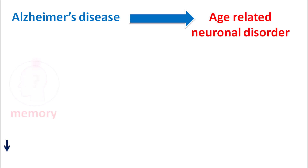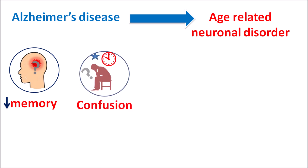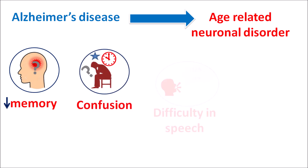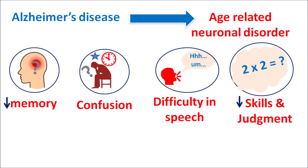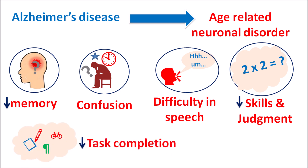In these patients we can observe loss of memory and confusion with respect to time or location, difficulty in speech resulting in slurred speech, and reduced skills as well as judgment. Patients cannot complete daily tasks due to decreased memory and lack of concentration. All these symptoms observed in the elderly are due to neurodegeneration, and Memantine can be used as an antagonist at NMDA receptors to reduce neurotoxicity and slow the progression of Alzheimer's disease.